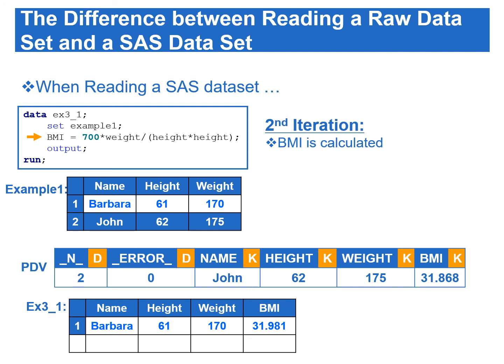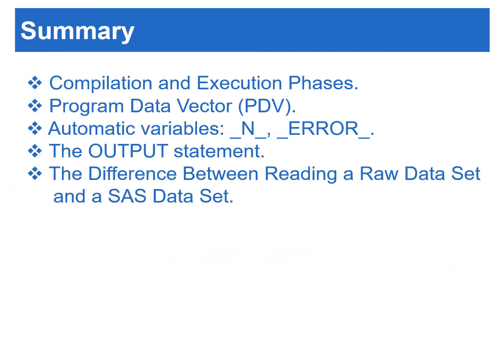This is a very important concept to understand before moving further. In conclusion, only newly created variables are set to missing at the beginning of each iteration of data step execution. To review what we've learned: the most important concept is understanding how the data step processes during the compilation and execution phases. SAS creates data one observation at a time via the Program Data Vector, or PDV. There are two automatic variables in the PDV: _N_ indicates the currently processed observation, and _ERROR_ signals data errors. We also learned the use of the OUTPUT statement, which instructs SAS to output data immediately when it executes. Lastly, we learned the differences between reading raw data and a SAS data set.